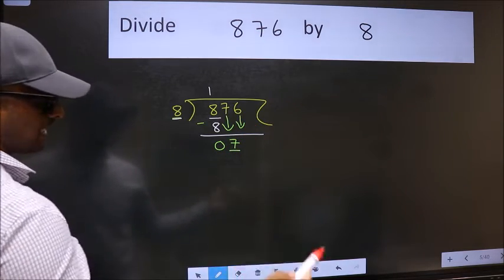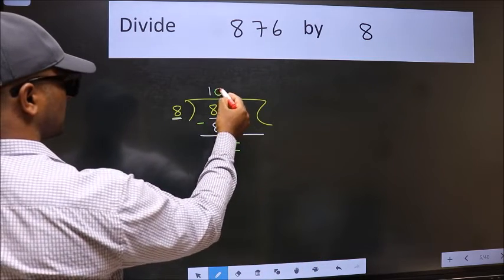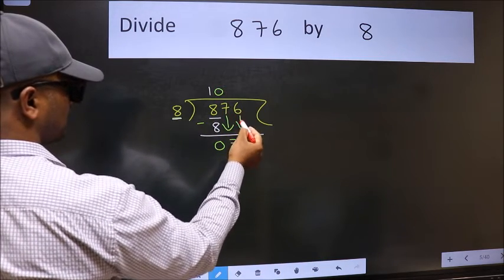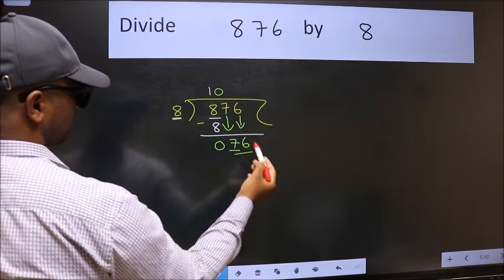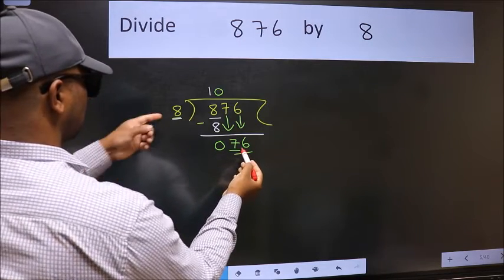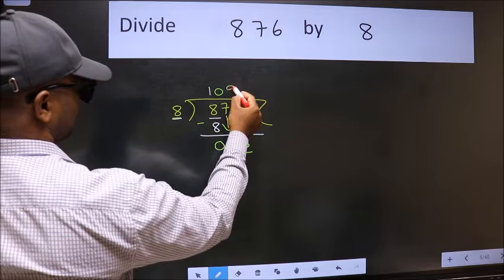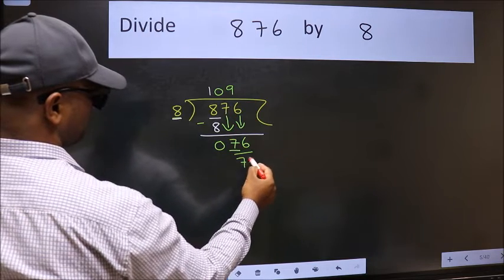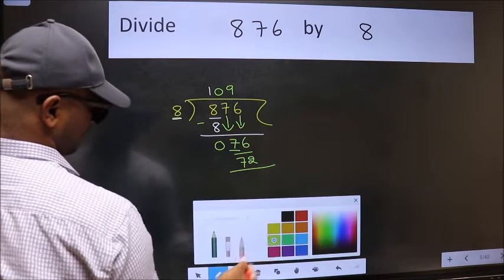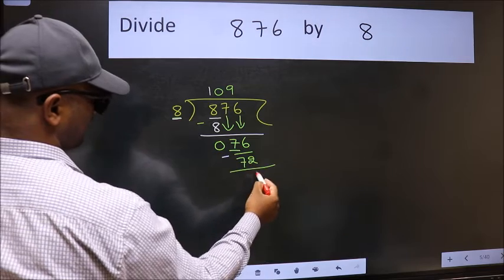The rule to bring down the second number is we should put 0 here, then only we can bring this number down. Now 76. A number close to 76 in 8 table is 8 nines 72. Now we should subtract. We get 4.